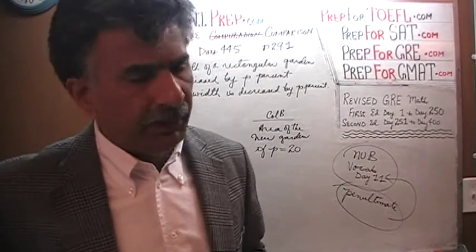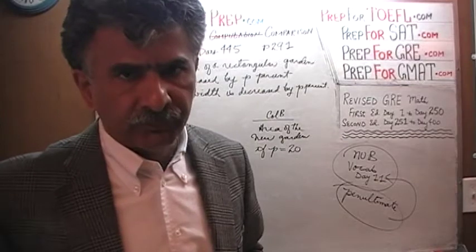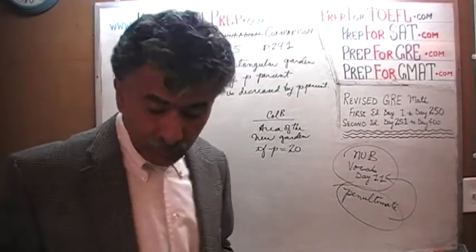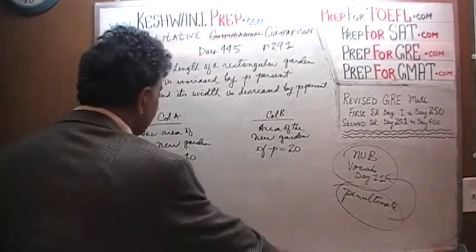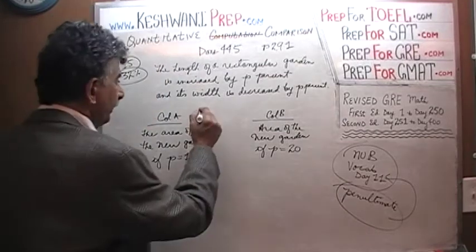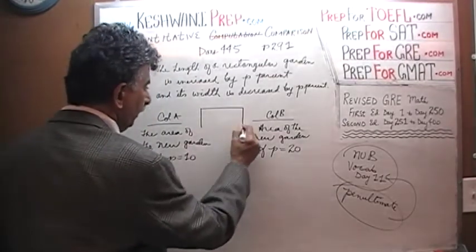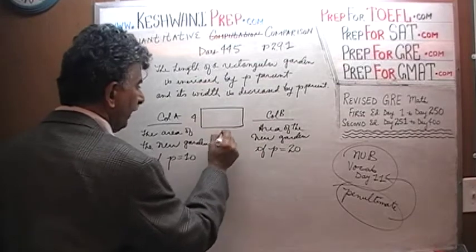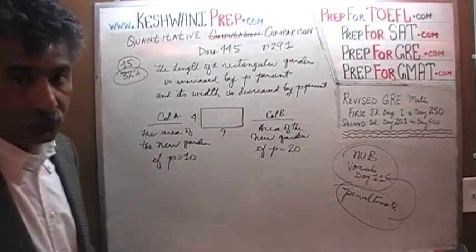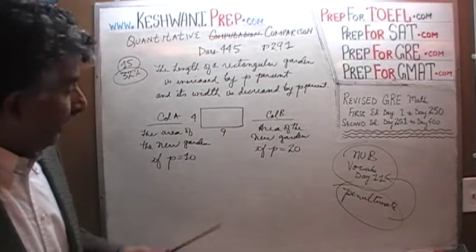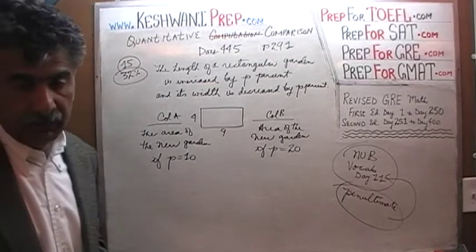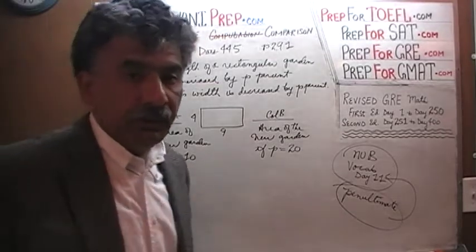Now having said that, in theory, you could make up any rectangle. For example, we could make up a rectangle that looks like this, a 4 by 9, that's a rectangle. You could do that. There is nothing wrong with it. Except these are not very smart numbers to plug in. These are not smart numbers because the calculation here is going to be hellish.